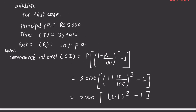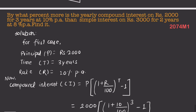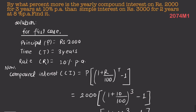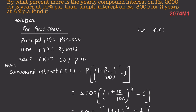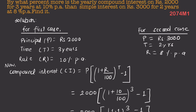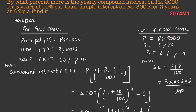Now for the second case: simple interest. The question gives principal P = RS 3000, time = 2 years, rate = 8%. Simple interest SI is equal to PTR divided by 100.